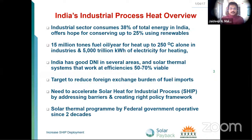The industrial sector consumes about 38 percent of total energy in India and offers hope for conserving up to 25 percent using renewable energy. Largely, this could be through solar — about 15 million tons of fuel oil per year are used for heating up to 250 degrees in industries. India has very good DNI in certain regions, making solar thermal systems viable at efficiencies between 50 to 70 percent. The government aims to reduce the foreign exchange burden on fuel imports, making it time to accelerate SHIP in India.